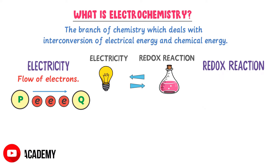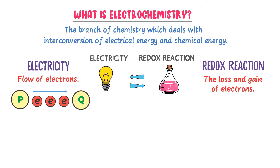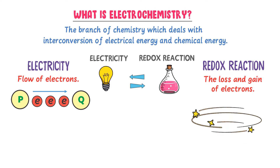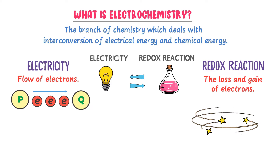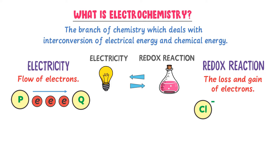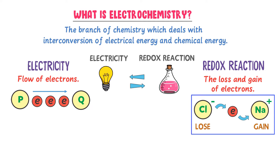What is a redox chemical reaction? The loss and gain of electrons in any chemical reaction is called a redox chemical reaction. When one atom or ion loses an electron and another atom or ion gains an electron, it is called a redox chemical reaction. For example, consider chlorine ion and sodium ion — when chlorine ion loses an electron and sodium ion gains an electron, this is an example of a redox chemical reaction due to the loss and gain of electrons.